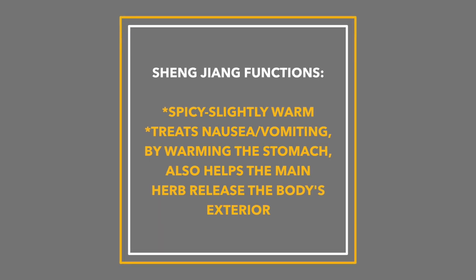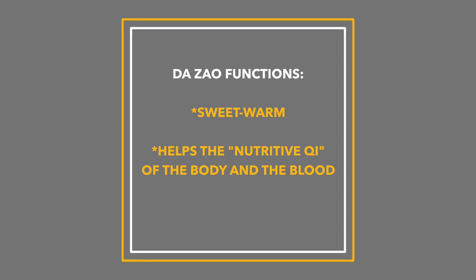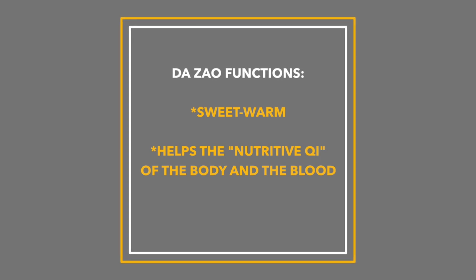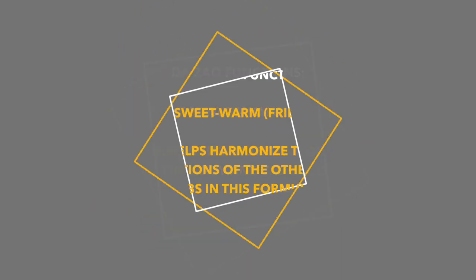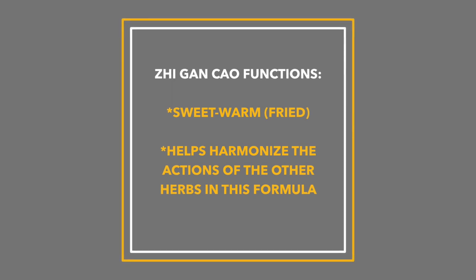Da zhao, which is jujube, helps also harmonize the blood. These overall assistants — shengjiang (ginger) and da zhao (jujube) — help the spleen and what's considered the middle qi, or the middle jiao, the middle section of the body. The final herb, zhi gan cao, is said to harmonize the actions of other ingredients. Gan cao is in almost every Chinese formula and is one of the most famous herbs.